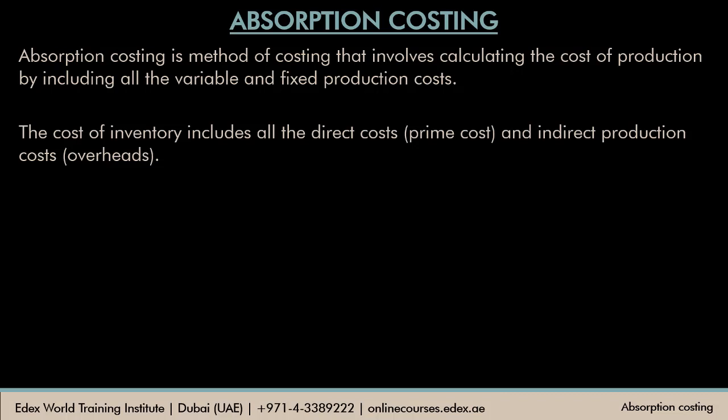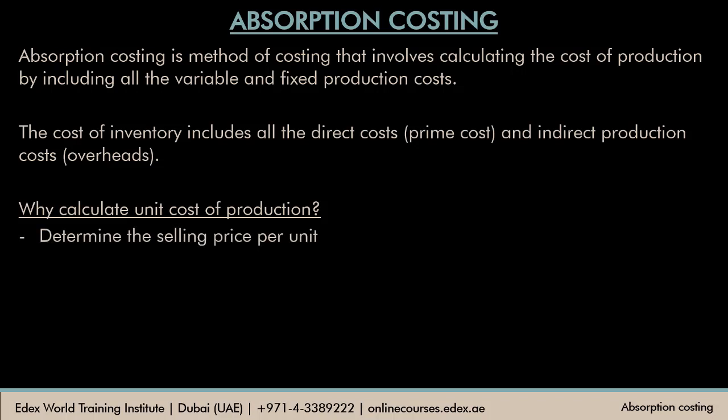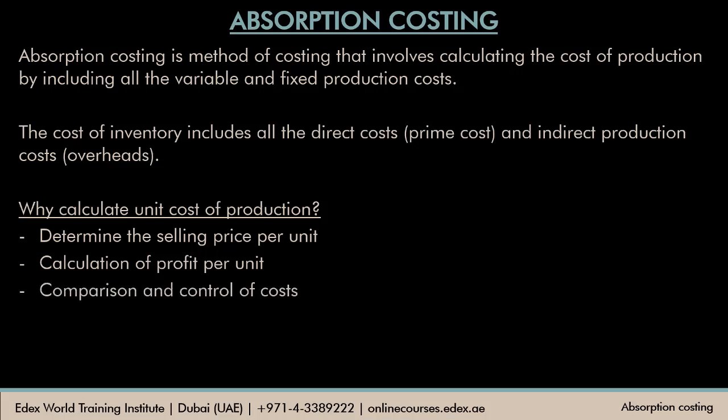This chapter is essentially about finding out the cost of your product. Why do we need to calculate the cost of a product? Some reasons include: determining the selling price per unit — when a customer asks for a price, you first need to know the cost, then load your profit margin to arrive at the selling price. You can also use the unit cost to calculate profit per unit sold, or compare your cost with competitors' products to assess cost control and improve profitability.